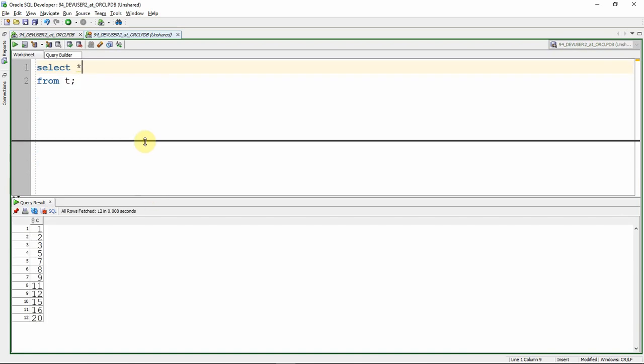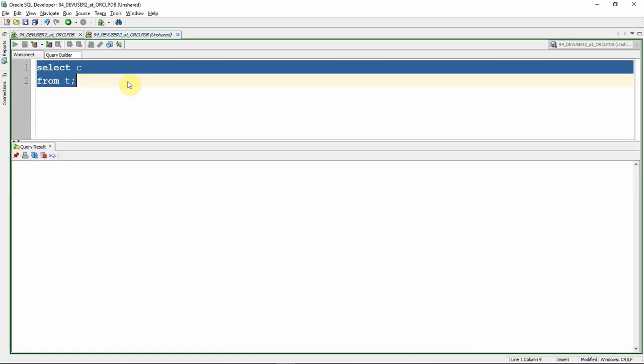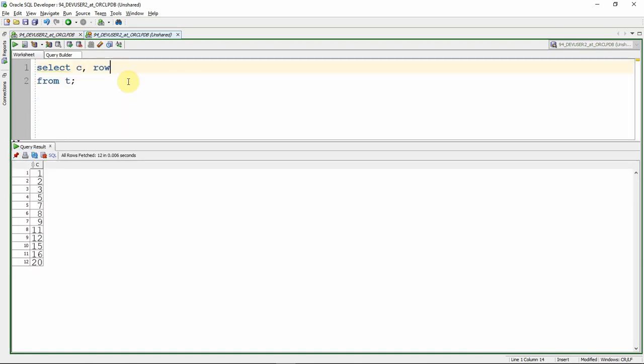Now, let me select the column. So along with that, I'm just going to select a row number. You can see that along with the column value, we are just now printing the row number pseudo column. Now what I'm going to do, I'm just going to subtract the column value and the row number value. Now you can clearly see, we just got the kind of grouping here.